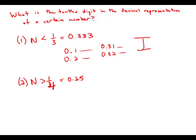Well, if it's greater than 0.25, it could be anything from 0.3 up to 0.9. It could even be something like 2.6, 2.7, etc. So again, there are a whole bunch of choices for what the tenths digit might be. This statement by itself is insufficient.